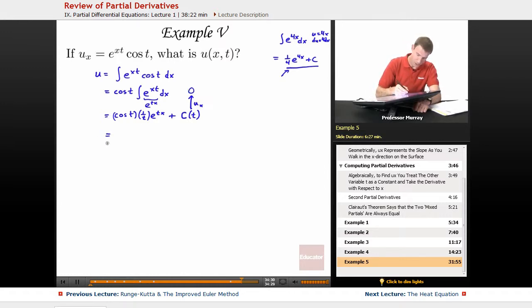So let me collect my terms and simplify that. 1 over t times e to the tx times cosine of t plus, I'm going to say, any function of t. So this could be any function of t. This is my u of xt.